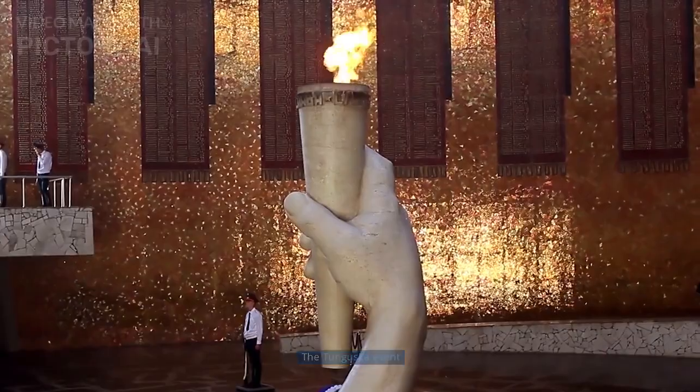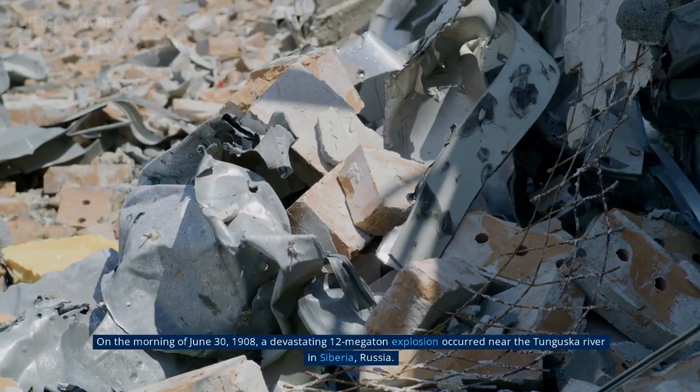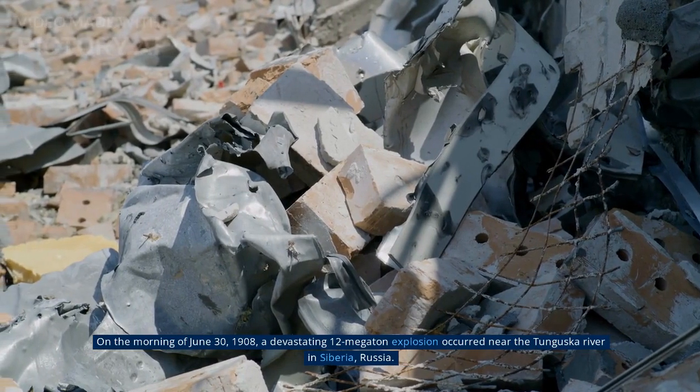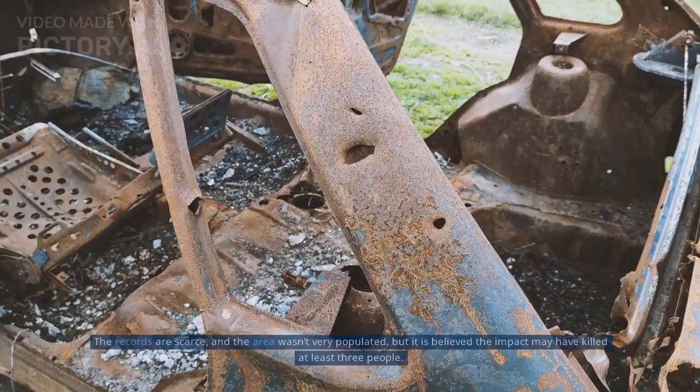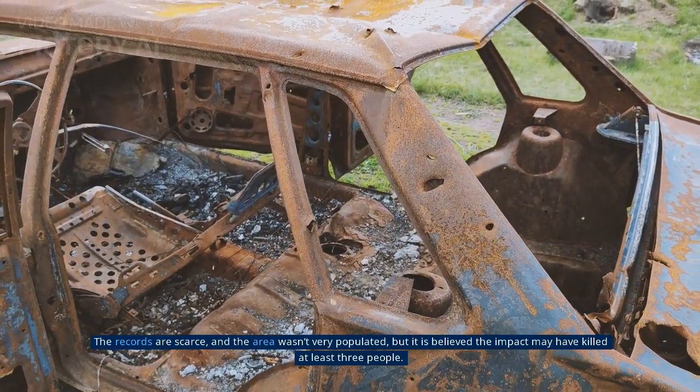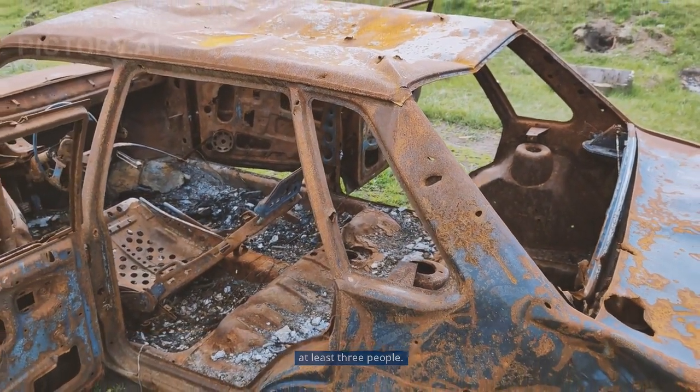Number 2: The Tunguska Event. On the morning of June 30, 1908, a devastating 12-megaton explosion occurred near the Tunguska River in Siberia, Russia. The records are scarce and the area wasn't very populated, but it is believed the impact may have killed at least three people.